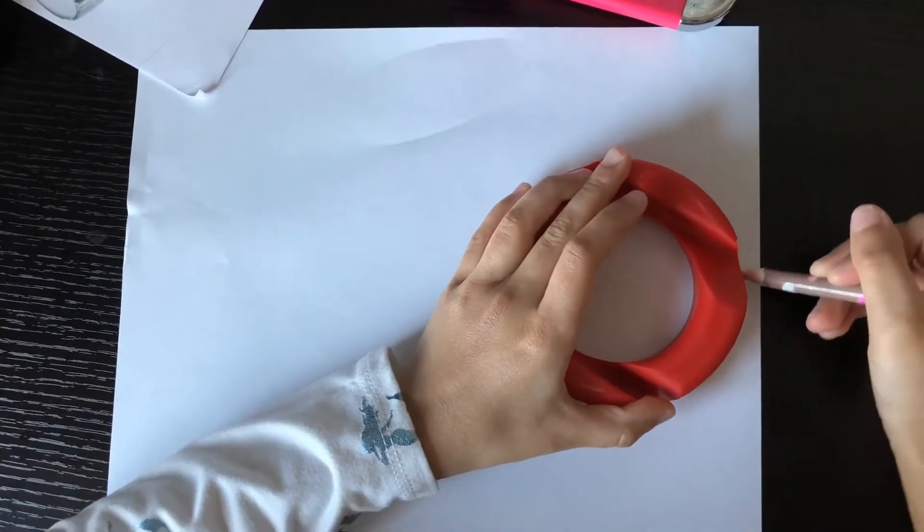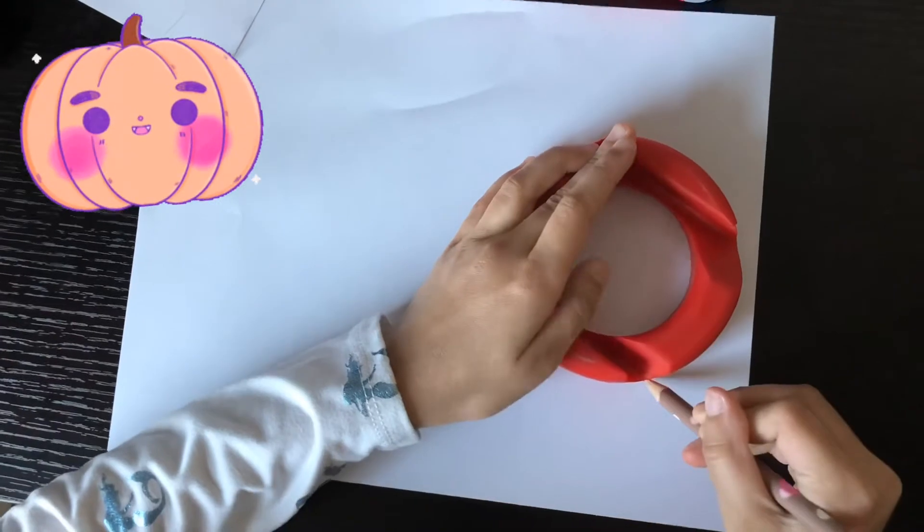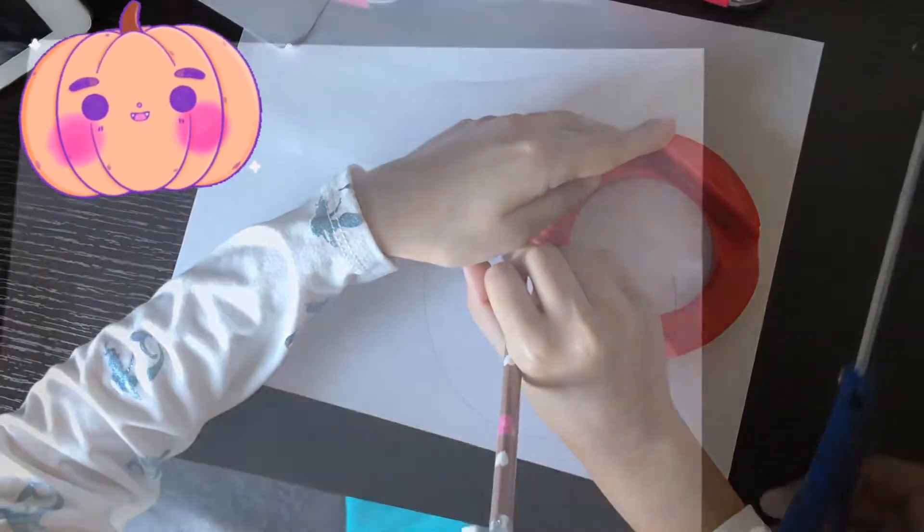So let's trace a circle. For that you will need something big, a big circle. You can use anything in your house.